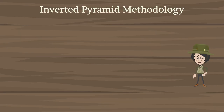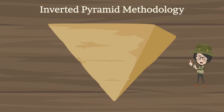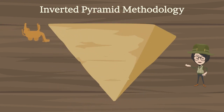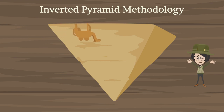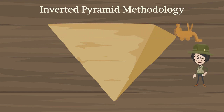Let's take a closer look at what it actually is. As the name implies, it is an upside-down content structure that places the most important information about the topic on the top. The pyramid usually includes five writing components.